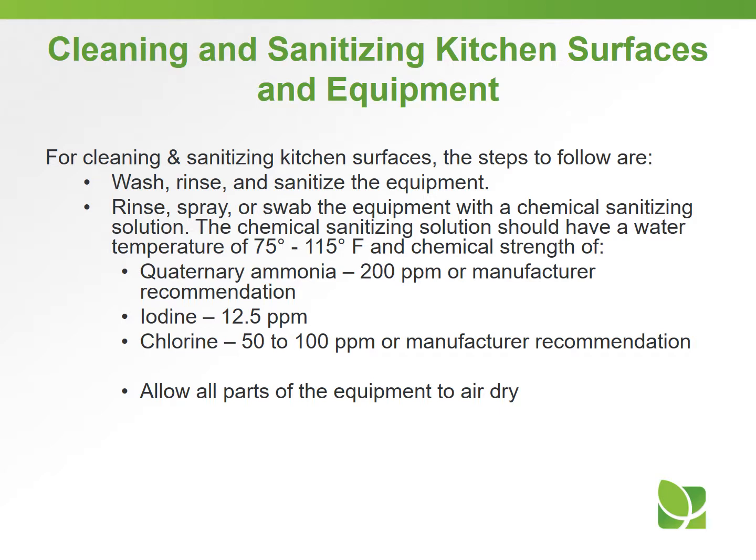For cleaning and sanitizing kitchen surfaces, the steps to follow are: wash, rinse, and sanitize the equipment — rinse, spray, or swab the equipment with a chemical sanitizing solution. The chemical sanitizing solution should have a water temperature of between 75 and 115 degrees Fahrenheit. Chemical strength: quaternary ammonium, 200 parts per million or per manufacturer recommendation; iodine, 12.5 parts per million; chlorine, 50 to 100 parts per million. Allow all parts of the equipment to air dry.